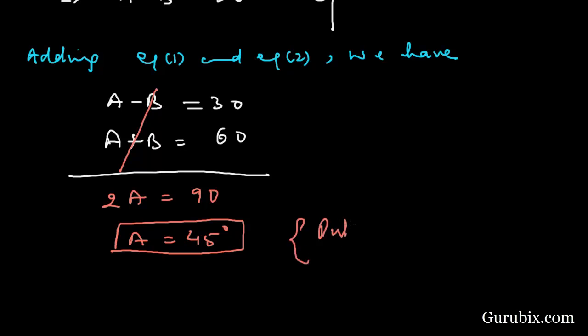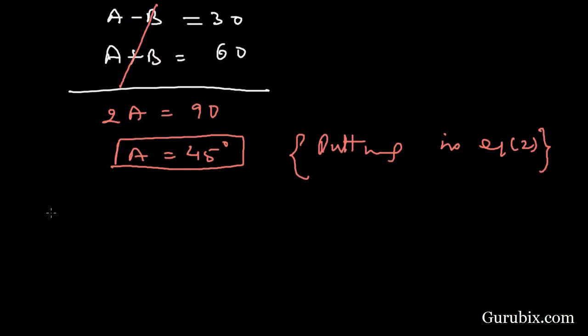We shall substitute this value in equation number 2 to get the value of B. Therefore we have 45° + B equals 60°, which means B equals 15°. So this is the solution of the question. Thank you.